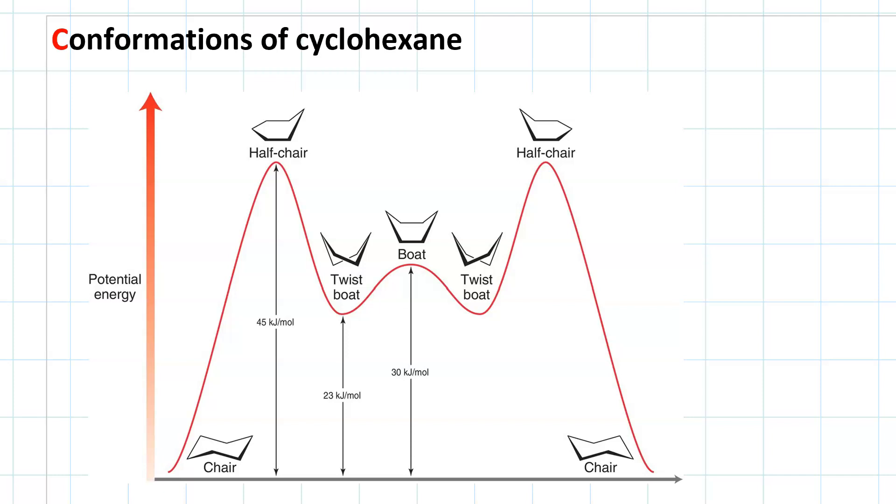Conformations of cyclohexane. We've already seen that cyclohexane is most stable as a chair. In fact, there are two different chairs that cyclohexane can adopt.